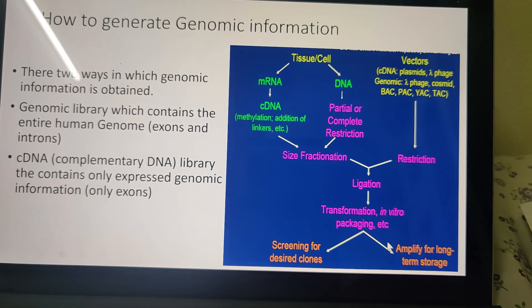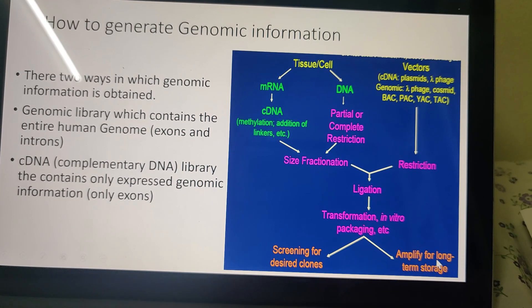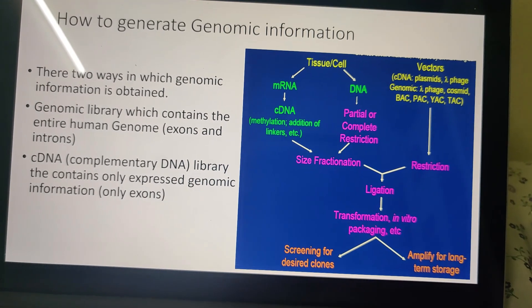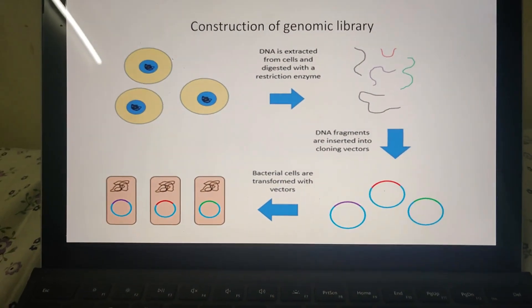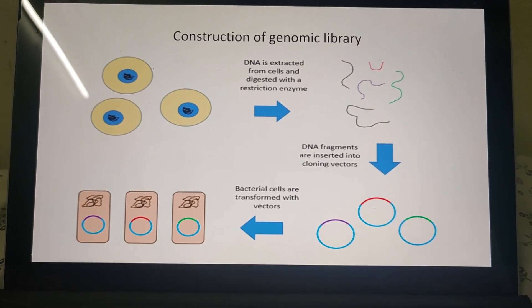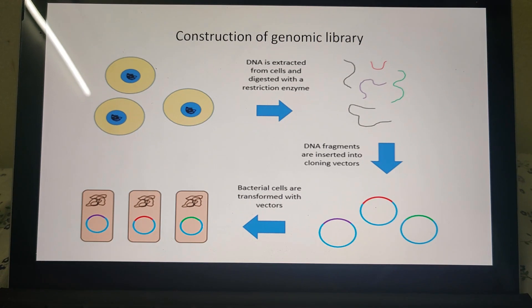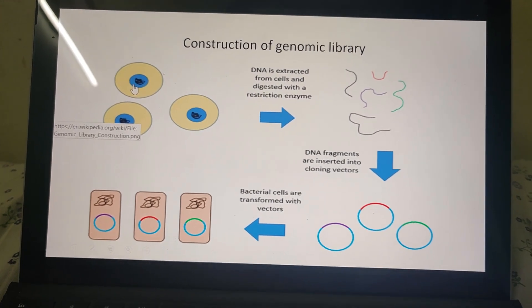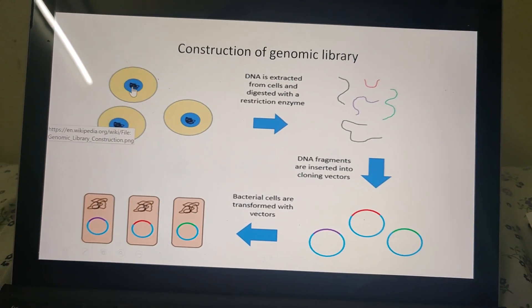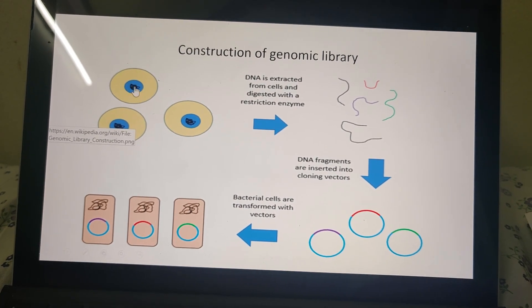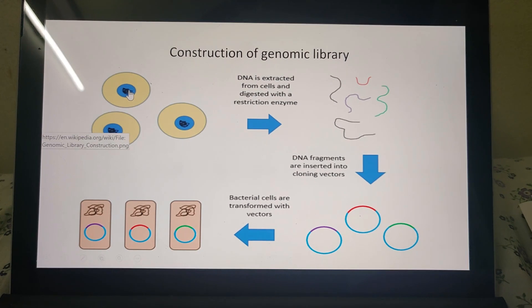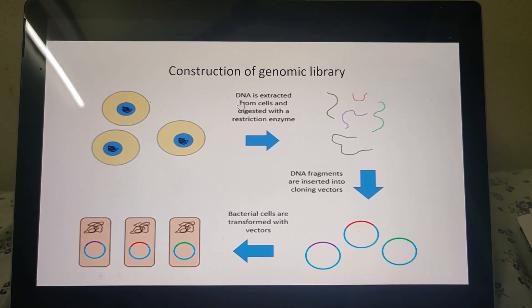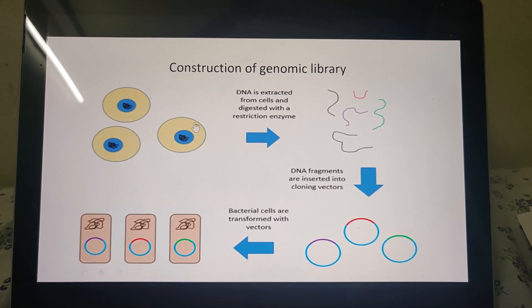Then, either the amplification will take place or you can go for screening of the particular clone in which we are interested. This diagram is a simplified way to understand how to construct the genomic library. Suppose these are the cells in which we are interested. This is the eukaryotic cell showing the presence of a nucleus with DNA. The very first step is isolation and extraction of DNA from the cell.